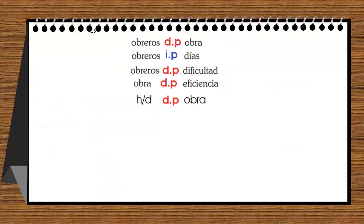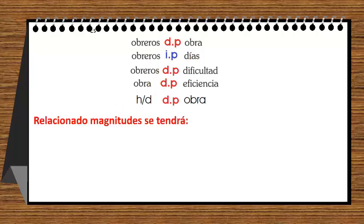Acá tenemos un resumen: obreros directamente proporcional a la obra, y obreros inversamente proporcional a días. Vamos entonces con esas relaciones a relacionar magnitudes.